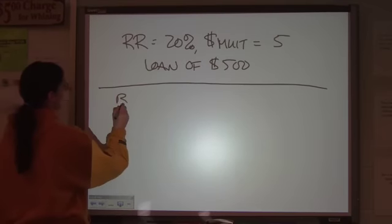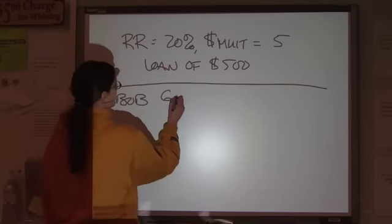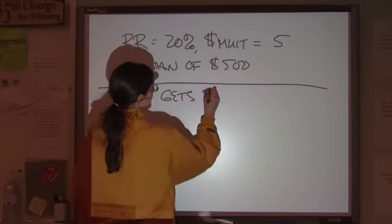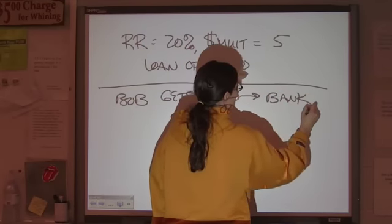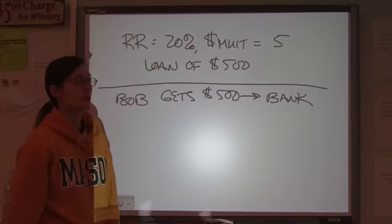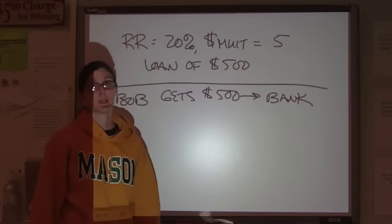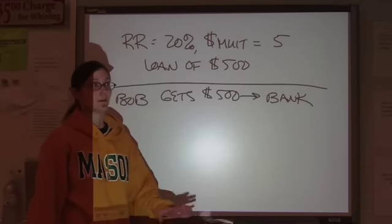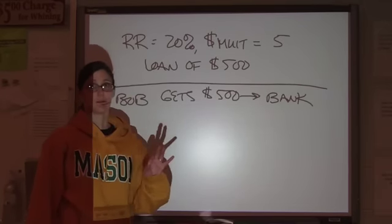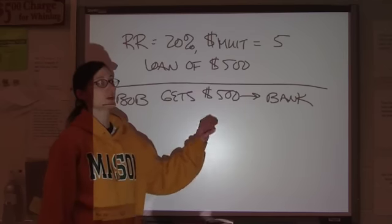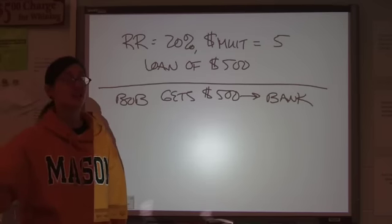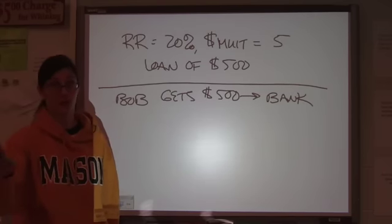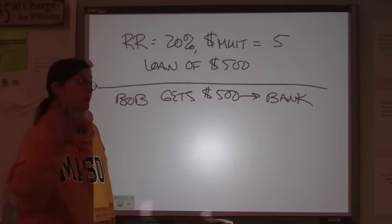So, Bob gets $500 and puts it in the bank, or spends it with other people who put it in the bank. Either way. Work with me here. Through multiple deposit expansion, it has to be deposited. If the money is actually all being spent, then it's a spending multiplier. It's a different process. It's a good question, but it's a different process.